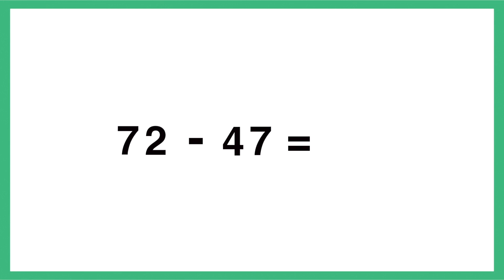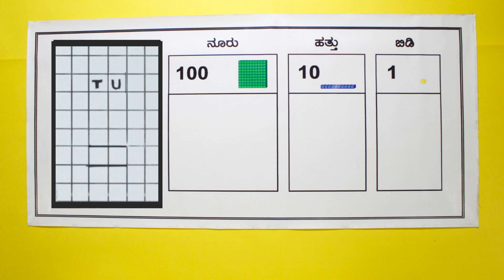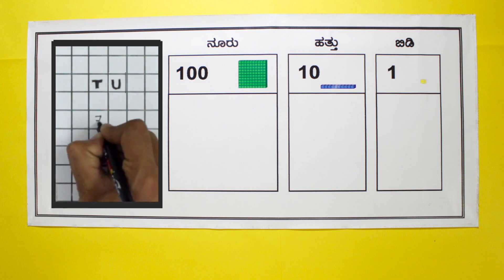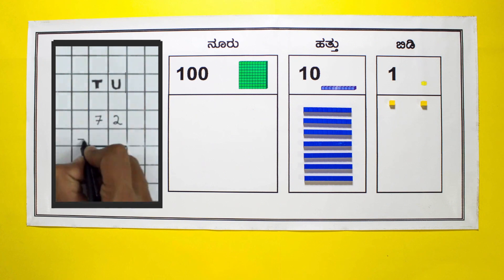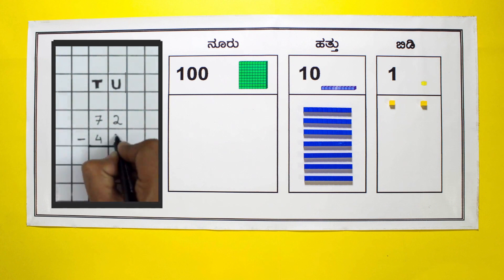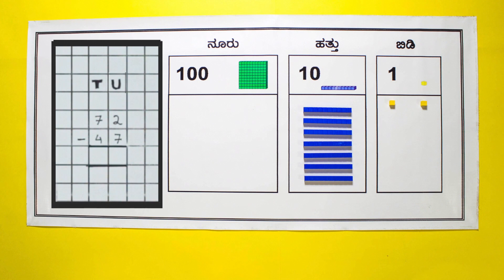Let's subtract 47 from 72, keeping all the rules in mind. Ask the students to say aloud 72 is 7 tens and 2 units and place the blocks on the place value mat. The bigger number is called the minuend and the smaller number which is to be subtracted is the subtrahend.